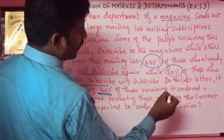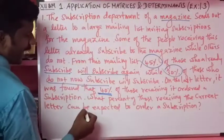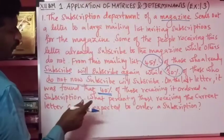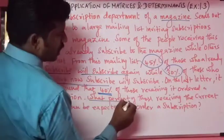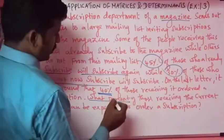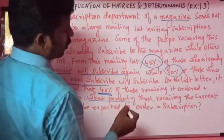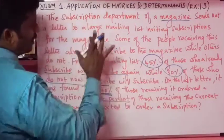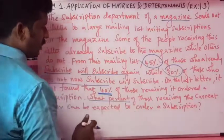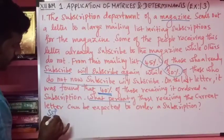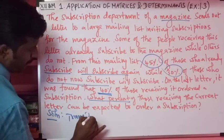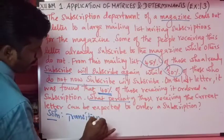It was found that 40 percent of those receiving the current letter can be expected to order their subscription. So now the question is: what percent of those receiving the current letter can be expected to order their subscription? We will use the transition probability matrix.